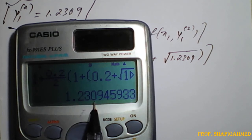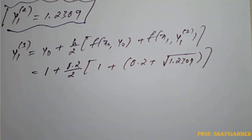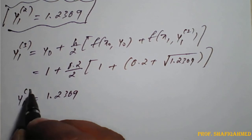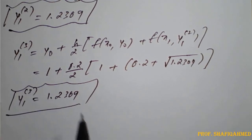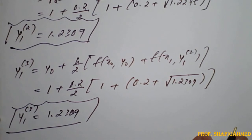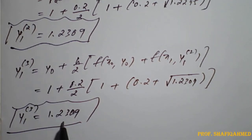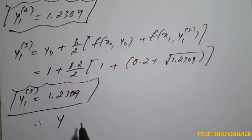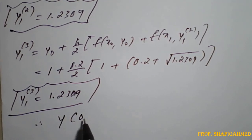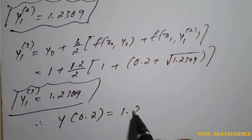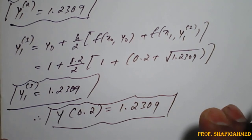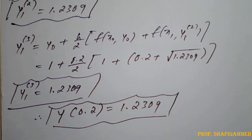The calculator gives 1.2309. Comparing with the previous approximation, y1^(2) = 1.2309 and y1^(3) = 1.2309 — they are the same. Therefore the iteration has converged, and y(0.2) = 1.2309 is the required solution of the given differential equation using the modified Euler's formula.